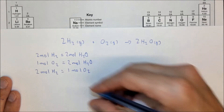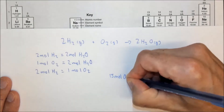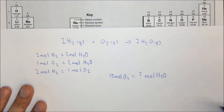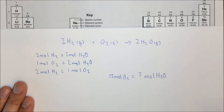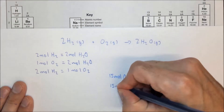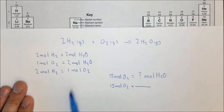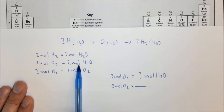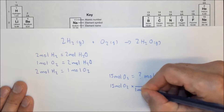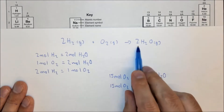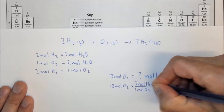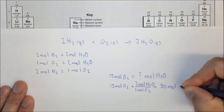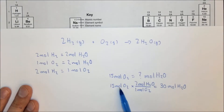Let's say we had 15 moles of oxygen and plenty of hydrogen and we want to know how many moles of water we can make. We can use these as conversion factors in dimensional analysis, starting with 15 moles of oxygen. We want to use the relationship between oxygen and water: one mole of oxygen on the bottom and two moles of water on the top. We find that we can make 30 moles of water from our 15 moles of oxygen.